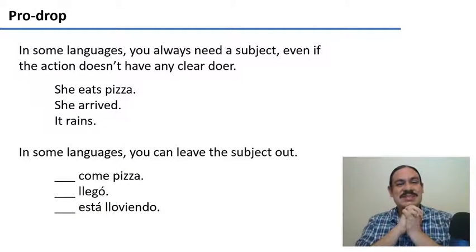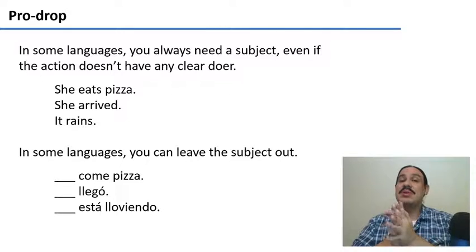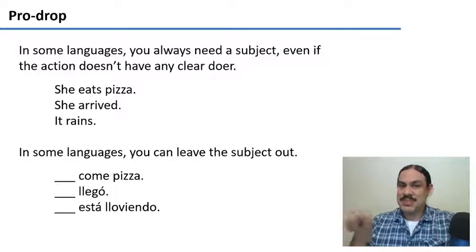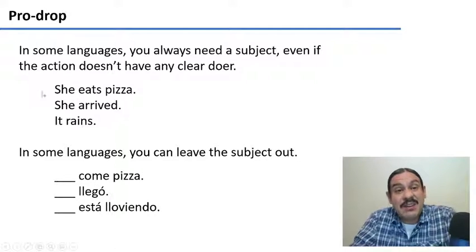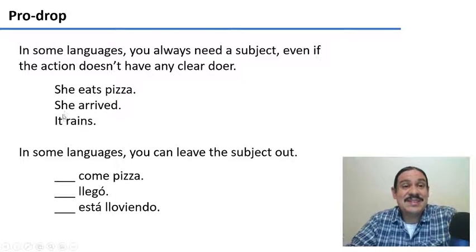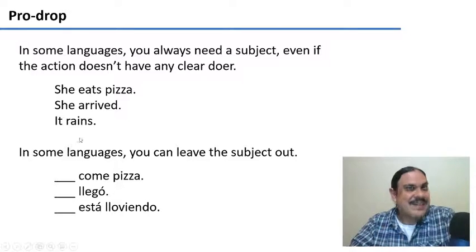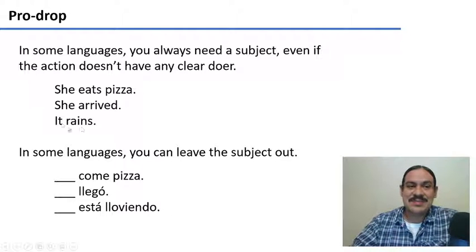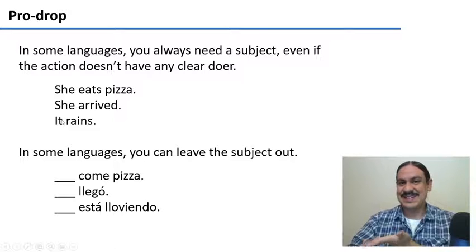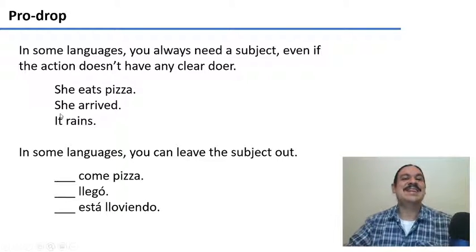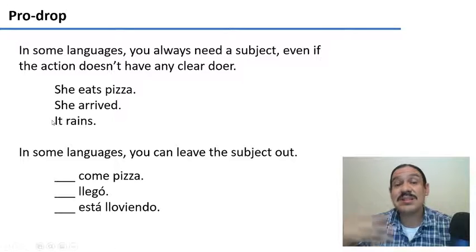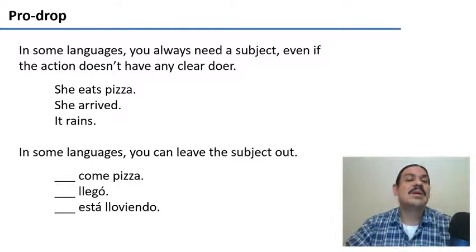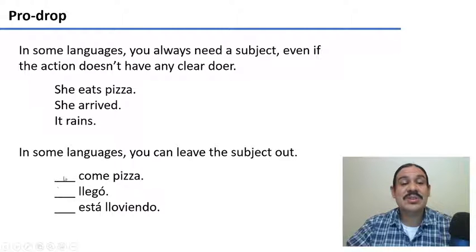Let's look at one final property of these trees, a property called pro-drop, for whether you can leave out your subject. In some languages, you always need a subject, even if it's not doing anything. For example, in 'she eats pizza' and 'she arrived', it is very clear that she is doing something. However, take a look at the sentence 'it rains'. What's raining? What is it? It's just - I mean, the rain just happens. So this little pronoun here is something that the structure of English demands. English demands that there always be a subject to a sentence.